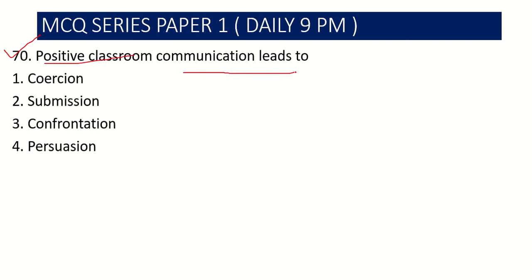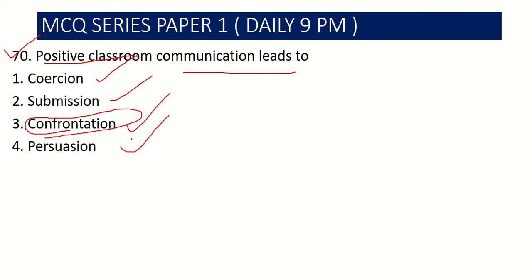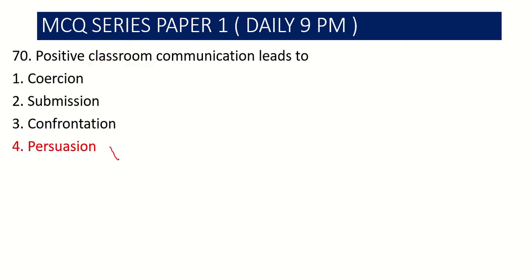The last question: Positive classroom communication leads to — coercion, submission, confrontation, or persuasion. Confrontation means counter and counter — you will say something, I will say something, and we confront each other. But if we talk about positive classroom communication, it leads to persuasion — we persuade others with what we are saying. So Option 4 is the correct answer.